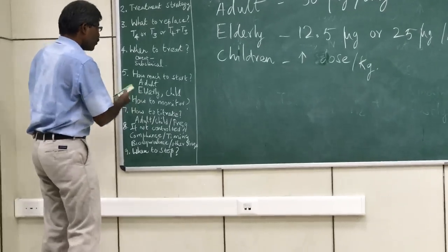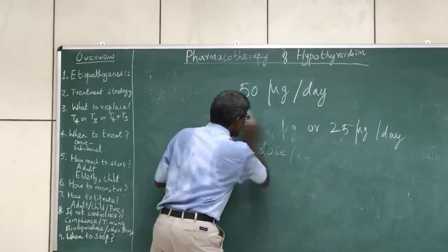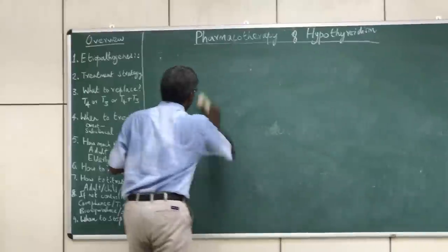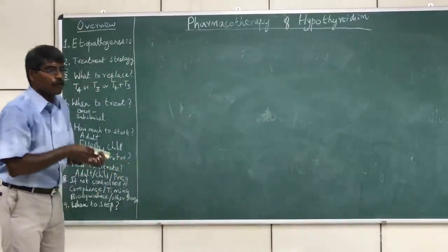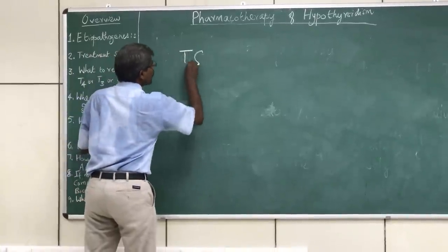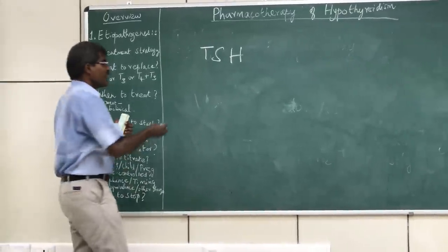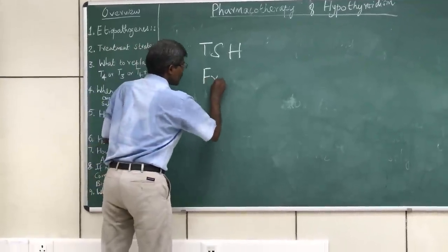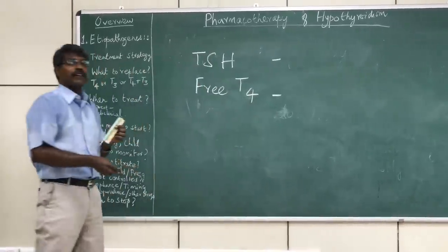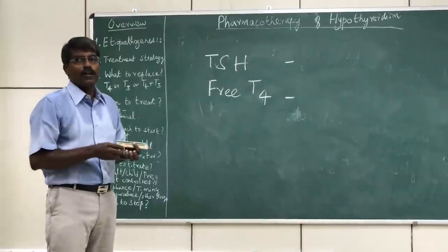How do we monitor these patients once we have started treatment — say, 50 micrograms per day in an adult? Monitoring is done by two parameters: the first and most important is TSH, and the second is free T4 levels. These are the two biochemical parameters used for monitoring a patient started on levothyroxine.